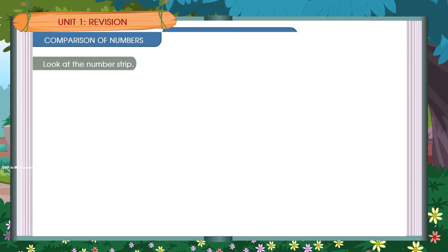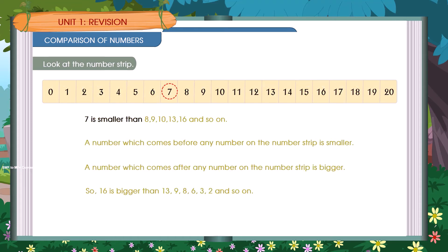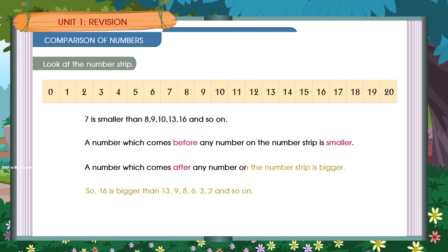Comparison of Numbers. Look at this number strip. 7 is smaller than 8, 9, 10, 13, 16 and so on. A number which comes before any number on the number strip is smaller. A number which comes after any number on the number strip is bigger. So, 16 is bigger than 13, 9, 8, 6, 3, 2 and so on.